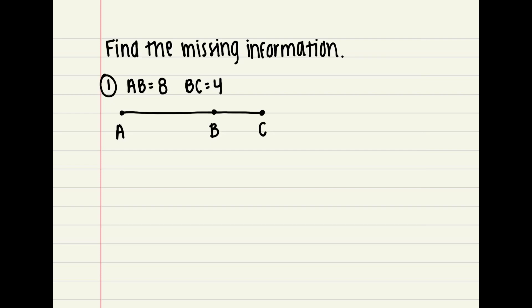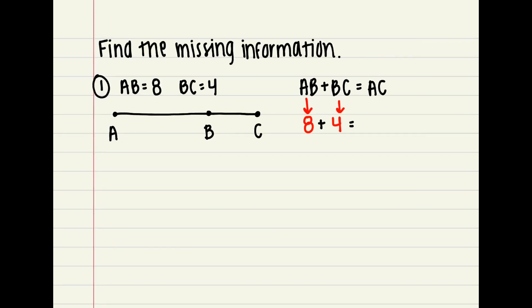I'm going to take the information I already know, plug it in, and solve for whatever is missing. AB was given as 8, plus BC is 4 — that was also given — and it is equal to AC, which is what I'm looking for. All you have to do is 8 plus 4, which gives you 12. So AC is equal to 12. I was given the two parts and had to find the whole.